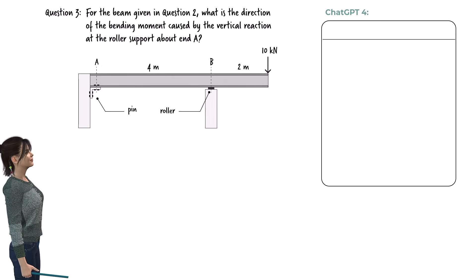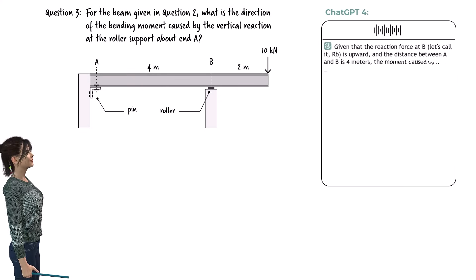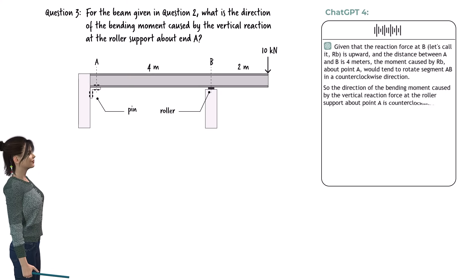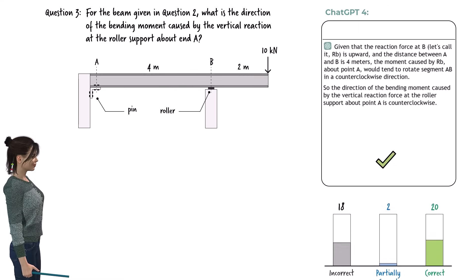For the beam given in the previous question, what is the direction of the bending moment caused by the vertical reaction at the roller support about end A? Given that the reaction force at B (RB) is upward and the distance between A and B is 4 meters, the moment caused by RB about point A would tend to rotate segment AB in a counterclockwise direction. So the direction of the bending moment is counterclockwise. Correct. Here is the breakdown of student responses.